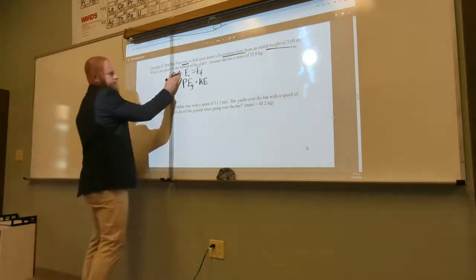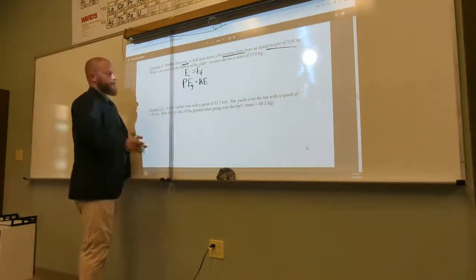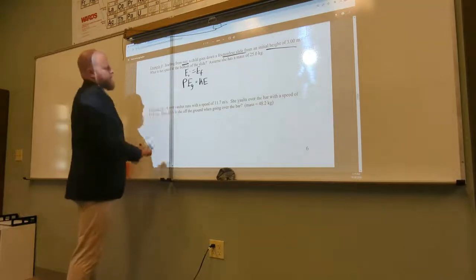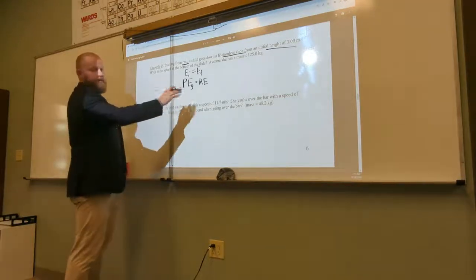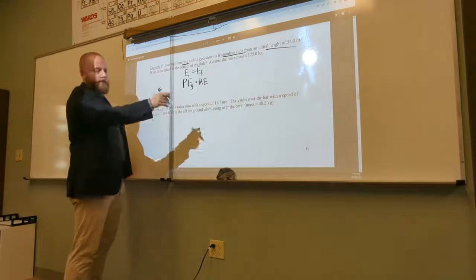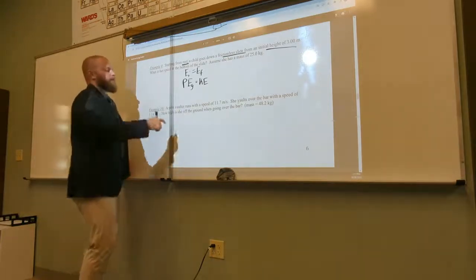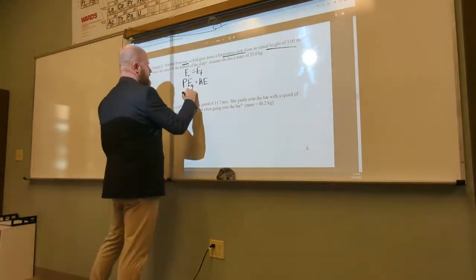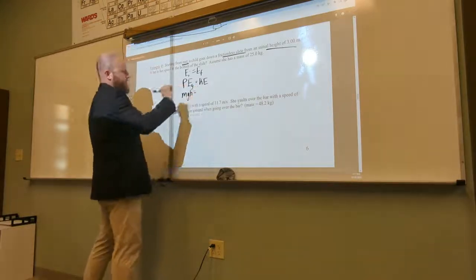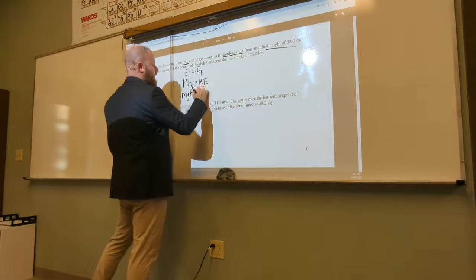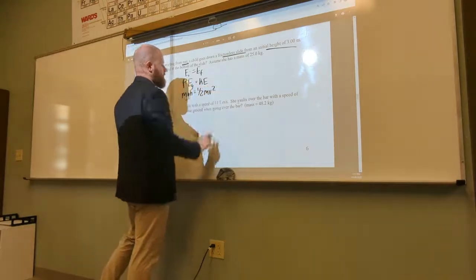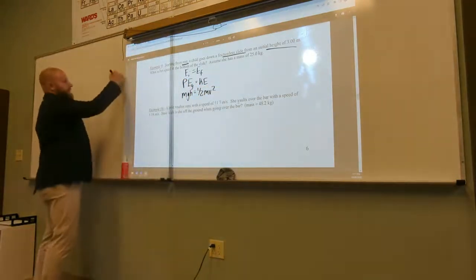So my first step is just writing down EI equals EF. My second step is going ahead and applying what types of energies do I start with, what types of energies do I end with. Then my third step is plugging in what these formulas are. So I have MGH, right? That's my formula for PEG. And I have one half MV squared.